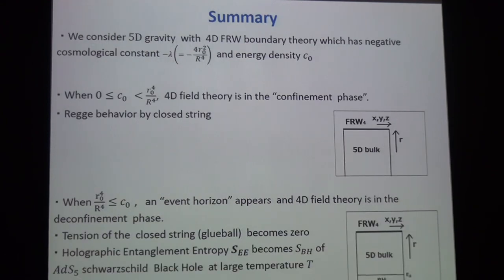So this is a summary. I consider five-dimensional gravity with four-dimensional FRW boundary with negative cosmological constant and energy density C_0. When C_0 is less than some critical value, the four-dimensional theory is in the confinement phase, and we get Regge behavior. When C_0 is larger than the critical value, there is an event horizon, and the field theory is in the deconfinement phase. The tension of the closed string becomes zero at the transition. The holographic entanglement entropy becomes the black hole entropy.